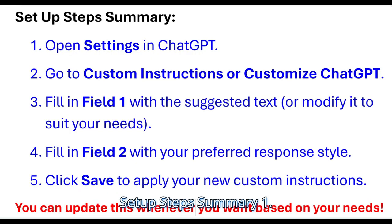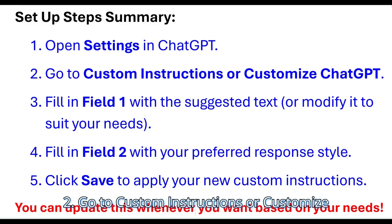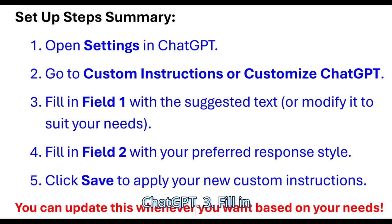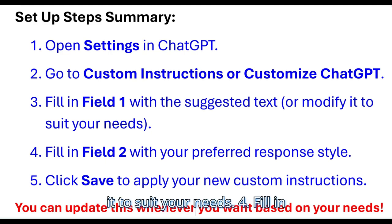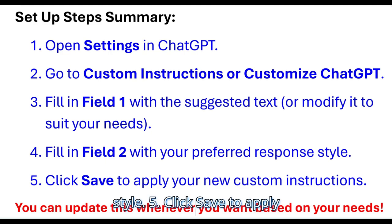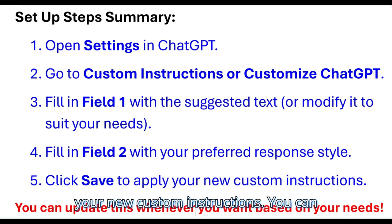Setup Steps Summary: 1. Open Settings in ChatGPT. 2. Go to Custom Instructions or Customize ChatGPT. 3. Fill in Field 1 with the suggested text, or modify it to suit your needs. 4. Fill in Field 2 with your preferred response style. 5. Click Save to apply your new custom instructions. You can update this whenever you want based on your needs.